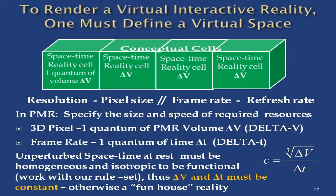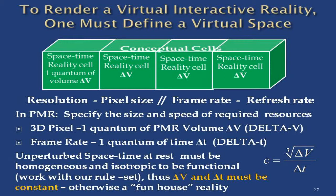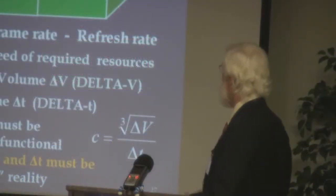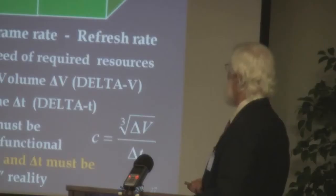Our virtual realities are specced the same way. These pixels of volume — because we're in a three-dimensional game, not a two-dimensional game. A 3D pixel is one quantum of volume. The frame rate is that delta T — the simulation outer loop, where time goes around delta T. That's a quantum of time for the simulation.